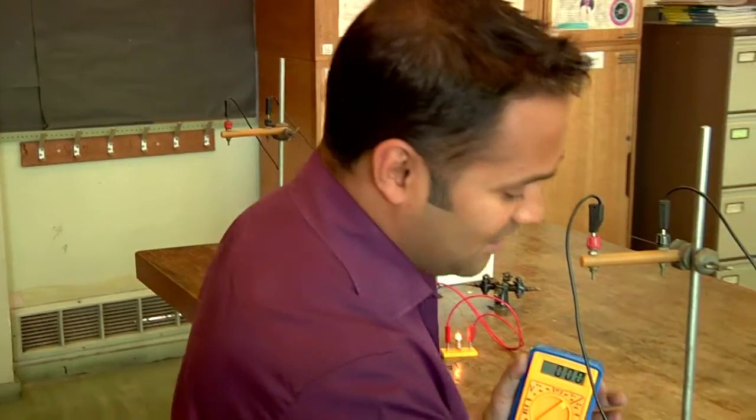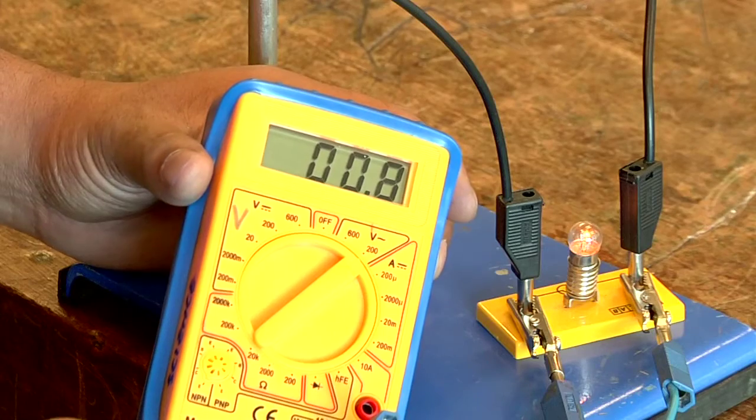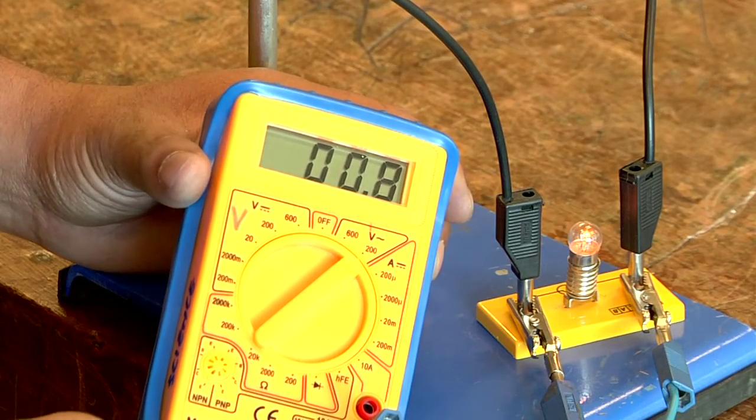By the time I've got to the second bulb, the voltage has dropped right down to about 0.8 of a volt.